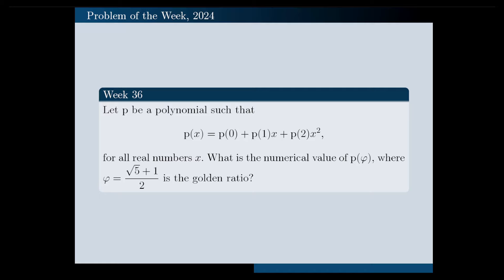Hello. In this video, I'm going to solve the following problem for you. Let P be a polynomial such that P(x) equals P(0) plus P(1) times x plus P(2) times x squared for all real numbers x. What is the numerical value of P(phi), where phi equals square root of 5 plus 1 all over 2 is the golden ratio?